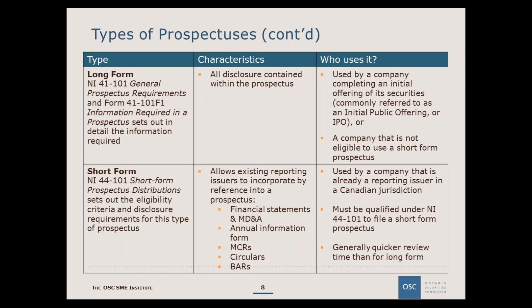Companies must comply with the specific disclosure requirements set out in National Instrument 41-101 and Form 41-101F1. For an initial public offering, a company becomes a reporting issuer following the issuance of a final receipt on its prospectus, and going forward will be subject to continuous disclosure obligations pursuant to National Instrument 51-102, Continuous Disclosure Obligations.